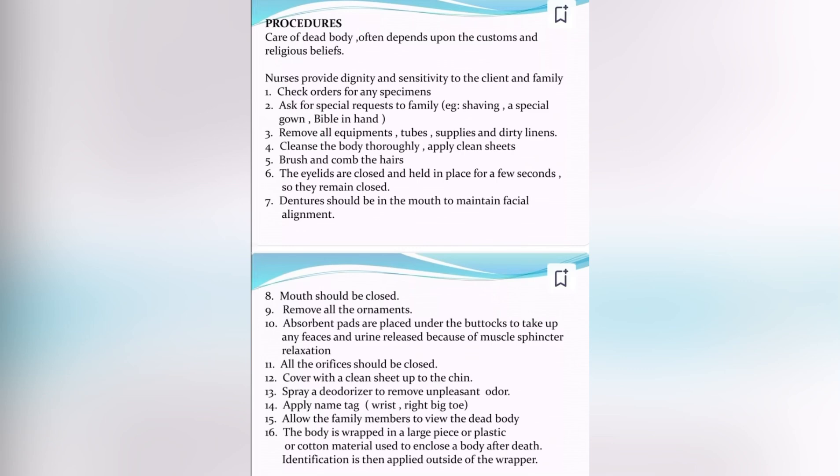Apply name tags to the wrist and right big toe. Allow family members to view the dead body. The body is then wrapped in a large piece of plastic or cotton material used to enclose the body after death. Identification is applied to the outside of the wrapper. Hand over all belongings to the relatives. Complete documentation in the nursing notes.